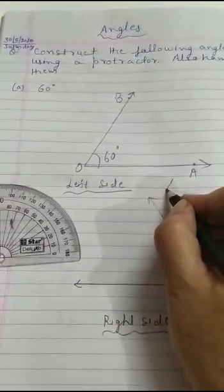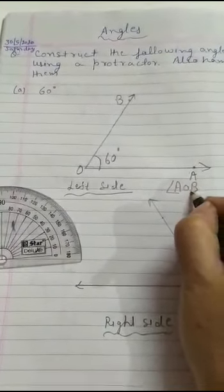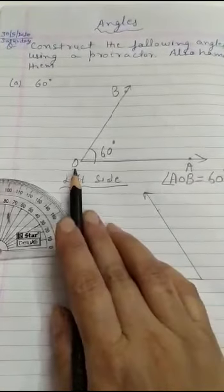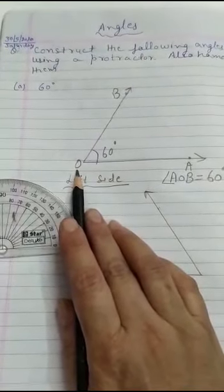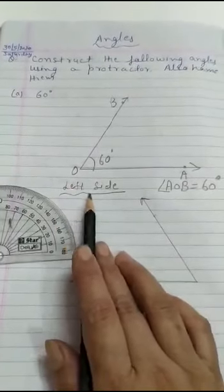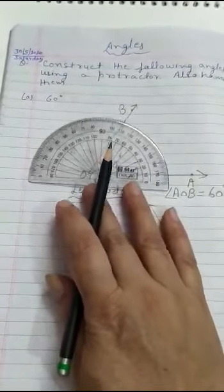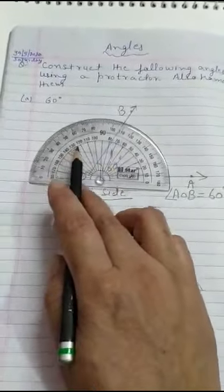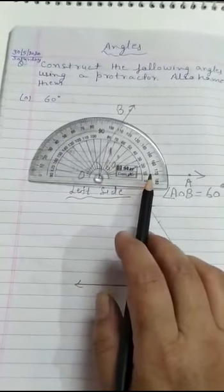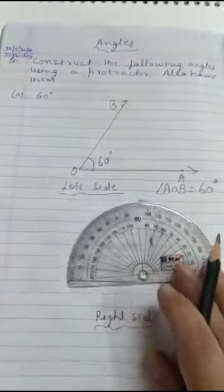The name of our angle is angle AOB equal to 60 degrees. And if we make it at the same time from the left-hand side, when we build the left-hand side, we see the protector at those places. If we count this position, we see the protector value.